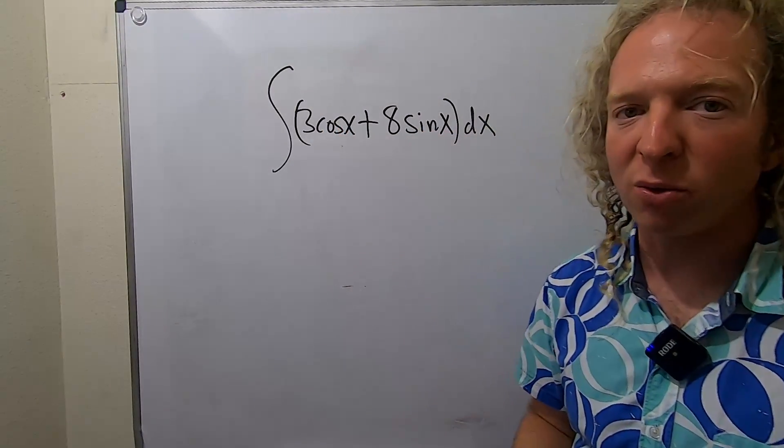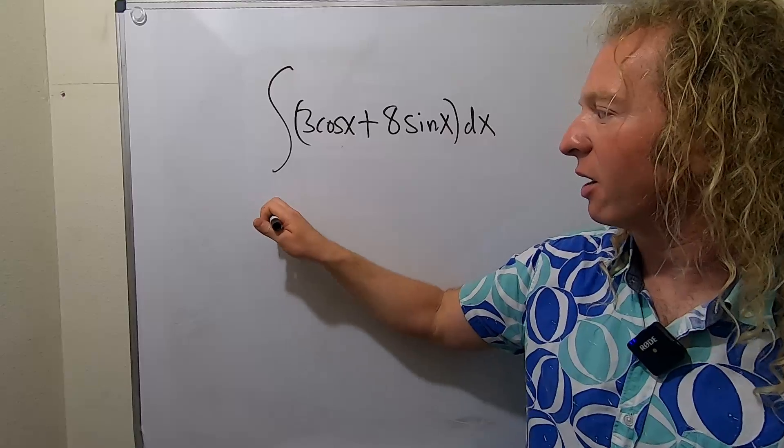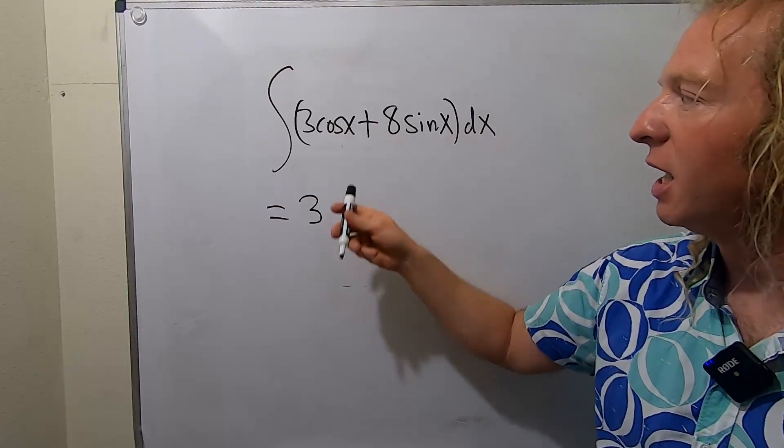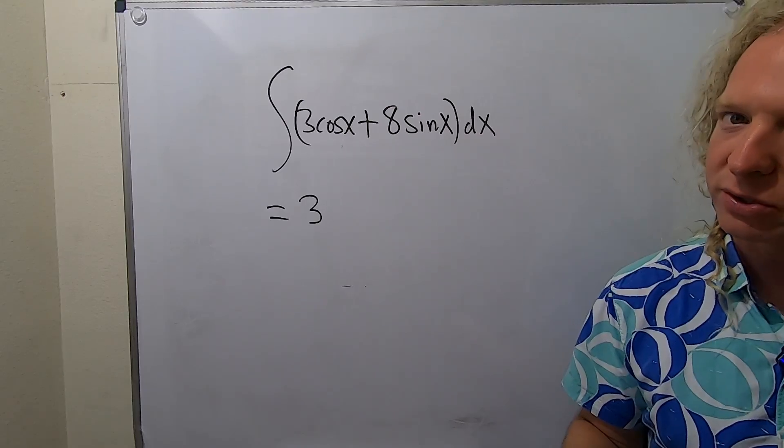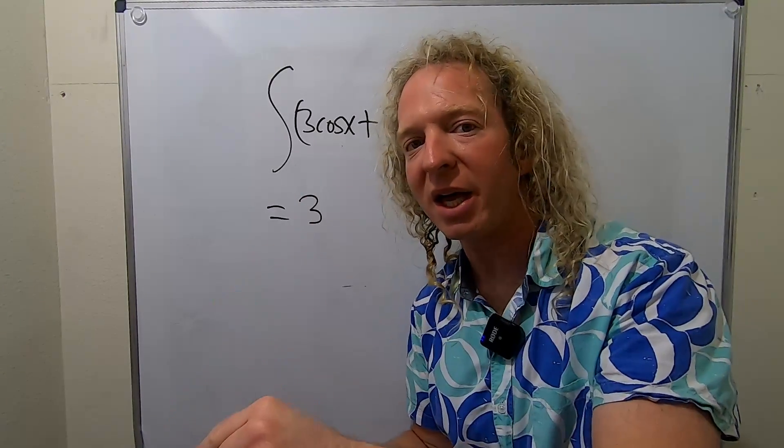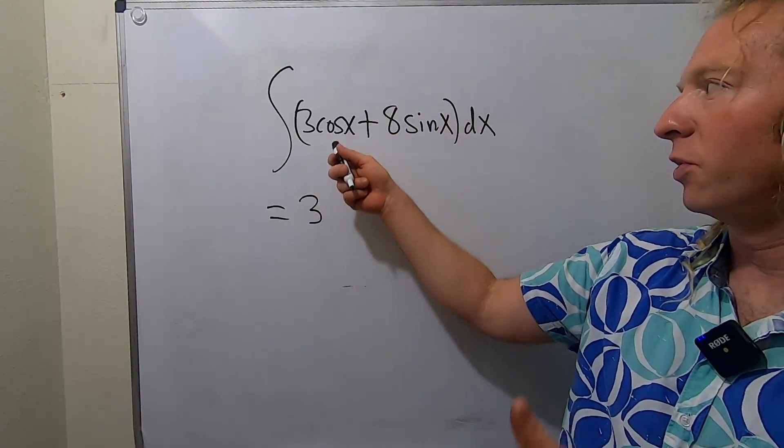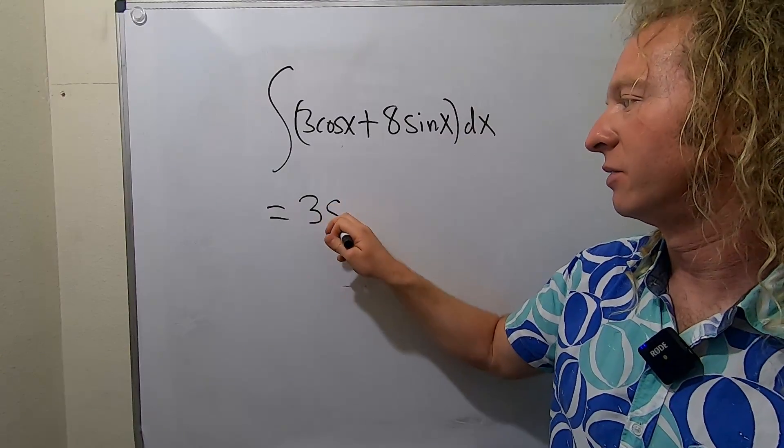So when you're integrating, you want to think backwards. So you know the 3 is going to hang out. So we have 3. And you ask yourself, what's a function whose derivative is cosine? Well, the derivative of sine is equal to cosine. So when you integrate cosine, you get sine.